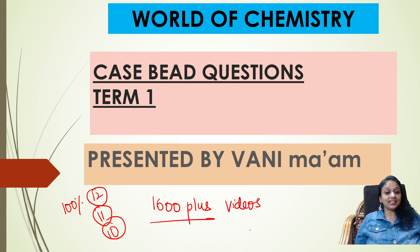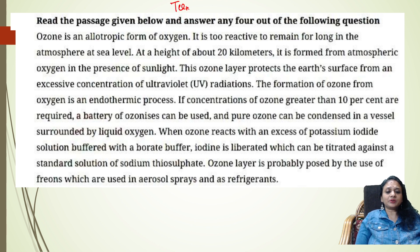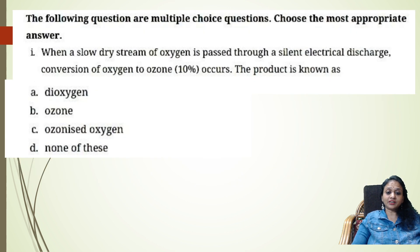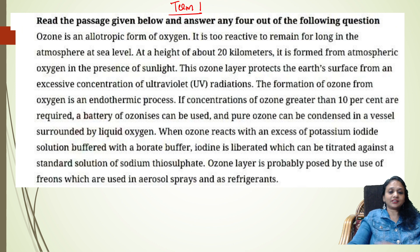Let us go into the session. Let's read the question and see how to answer it. In a case-based question, first of all there is a paragraph given. They may pick it up from any chapter of Term 1. They'll give you a particular paragraph — your first important thing is to read it carefully and underline the sentences that are very important. Below the paragraph, five questions are given to you. Let us first go through the paragraph and underline.